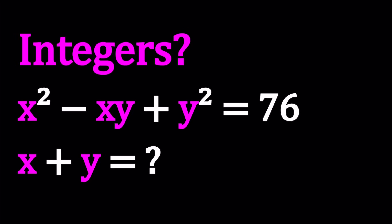Hello everyone. In this video, we're going to be solving a Diophantine equation. We have x squared minus xy plus y squared equals 76. x and y are integers, and we're going to be evaluating x plus y. So let's go ahead and see how we can solve this equation.